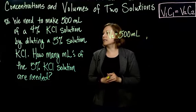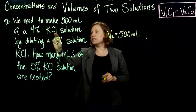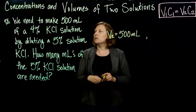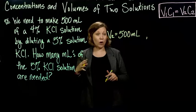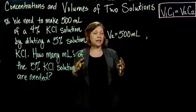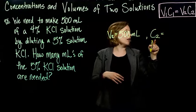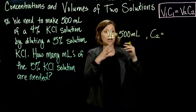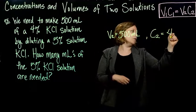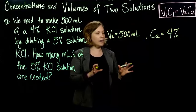What else did they tell us? They say of a 4% potassium chloride solution. So we need to make 500, what we want to end up with is 500 milliliters of a 4% potassium chloride solution. So our concentration when we're done diluting should be 4%.